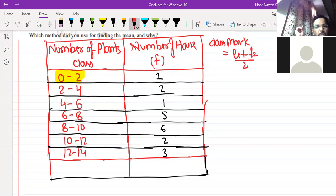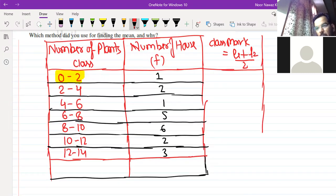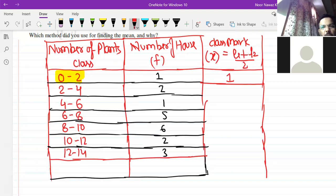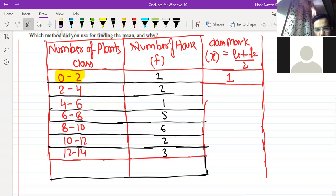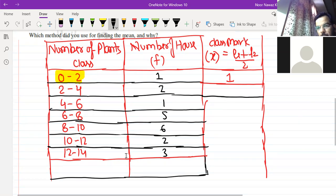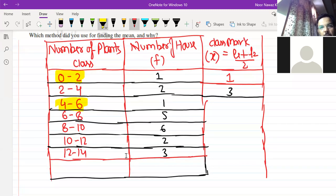If you have the class that is given from 0 to 2, then you have to find the midpoint. So what is the lower limit here? 0. And what is the upper limit? 2. So what will it be? 0 plus 2, 2 by 2. So what will it be? 1. 2 plus 4, 6 by 2 is 3. 4 plus 6, 10 by 2 is 5.